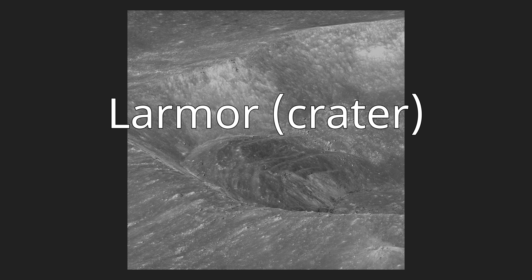The satellite crater Larmor Q, located about one and a half crater diameters to the southwest of Larmor, lies at the center of a ray system. These rays lie primarily within cones to the north and southeast, while a 120° arc to the west is free of ray material.